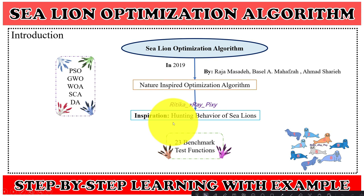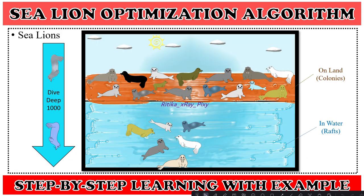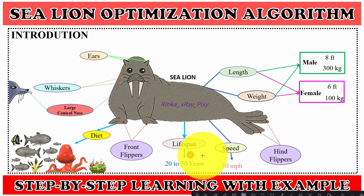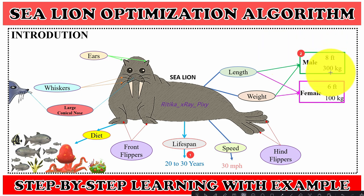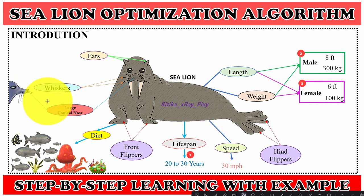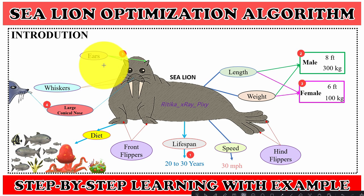Since this algorithm is inspired by sea lions' hunting behavior, we first need to understand sea lions' behavior and hunting strategies. Sea lions are one of the most intelligent creatures, living in large colonies with member sizes up to 1000 individuals. Their average lifespan is about 20 to 30 years. Male sea lions are about 8 feet in length and weigh 300 kilograms, while females are about 6 feet and weigh 100 kilograms. They have short thick fur to stay warm in cold water.